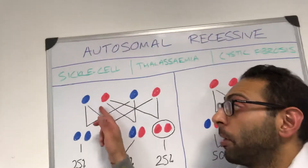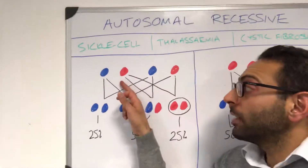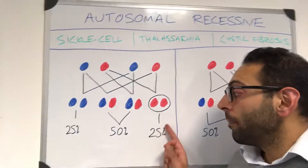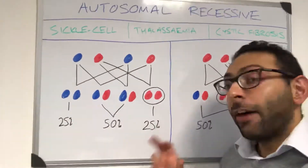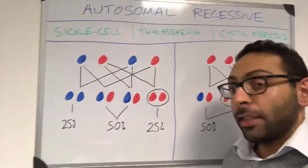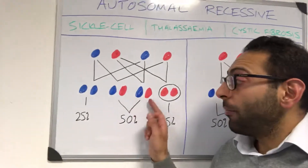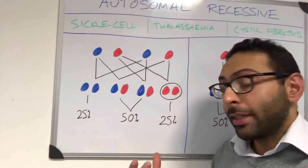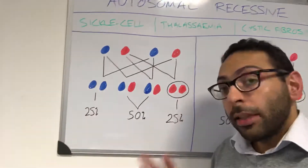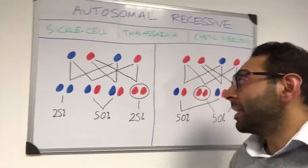In the first example, both parents are carriers — neither has the condition, but each has one affected gene. The child has a 25% chance of having the actual condition with two affected genes, a 50% chance of being a carrier like the parents with one affected gene, and a 25% chance of having nothing to do with the condition — neither a carrier nor having the condition itself.